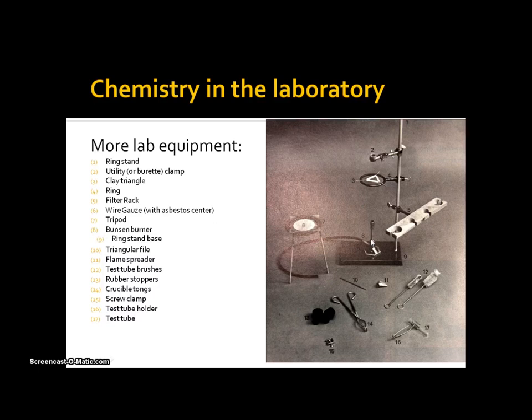A ring stand base - that's what the Bunsen burner is sitting on. A triangular file, a triangular file is this thing - it's just like a file, it smooths things out like sandpaper.